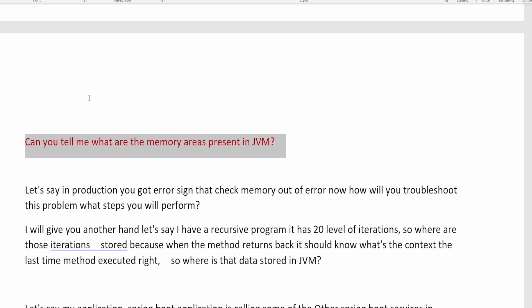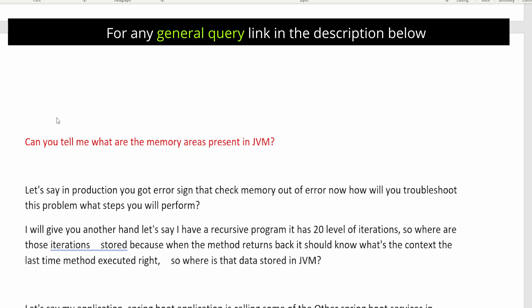The next question is: can you tell me the memory areas present in JVM? There are two major areas: stack memory and heap memory. Heap memory is where all objects are stored; stack memory is where all primitive values and object references are stored. Heap memory is further divided into Eden space, first generation space, large generation space, and some other spaces. This is a very important interview topic — make sure you read about it in detail.